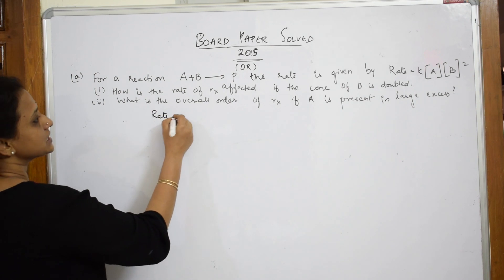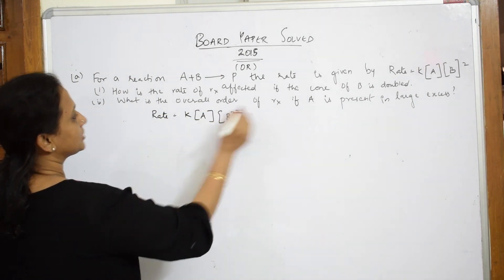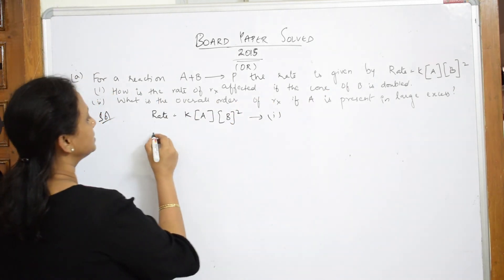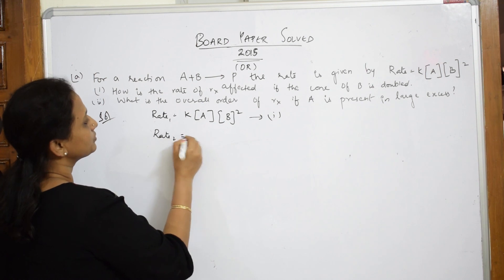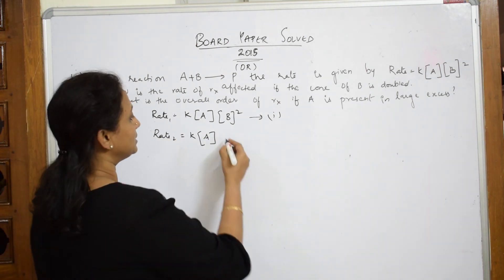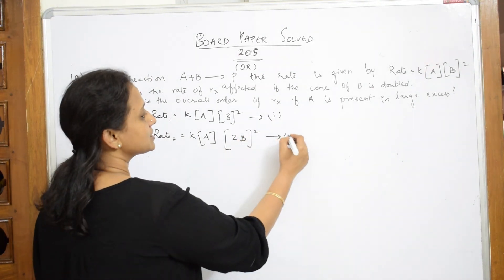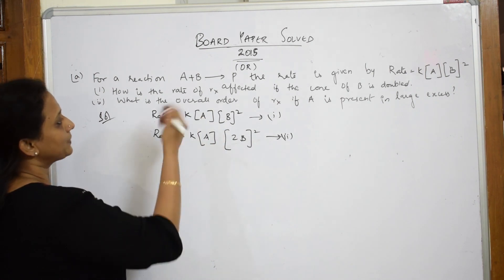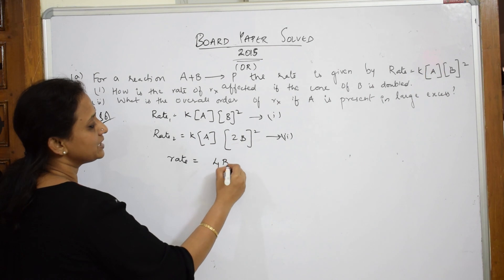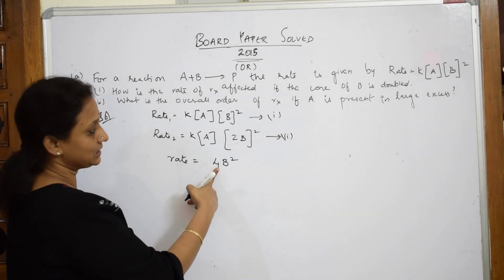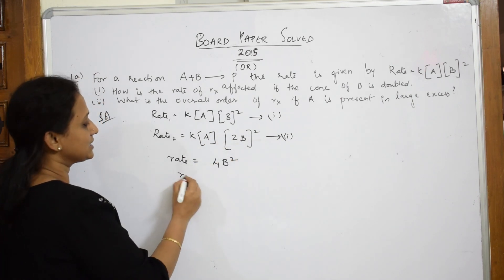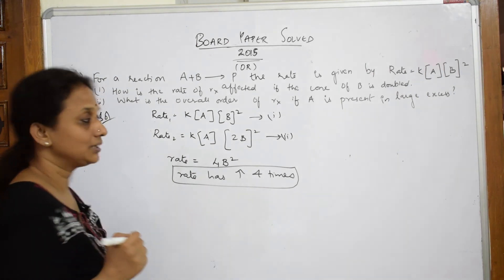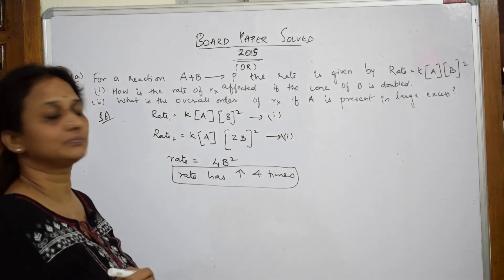What is given to us? Rate is equal to K, A and B square. Let me write solution. This is your first reaction. They said in the second minute, rate of B is doubled. So I am going to write this as rate 1. Let me assume this as rate 2. Rate of B is doubled. So 2B is squared. Let me name this as 2 because it is doubled. Initially, how much was the rate? It is only 1. Here it has become doubled. What happened to the rate now? Rate has increased. It has become 4B square. How many times did this increase? This has increased 4 times. Rate has increased 4 times. That is it. This is what the examiner wants you to write. This is doubled, so 2 squared is 4. Done.